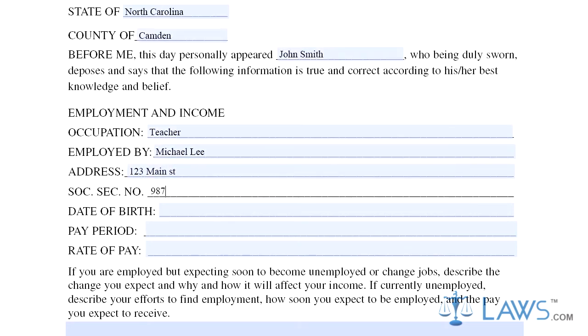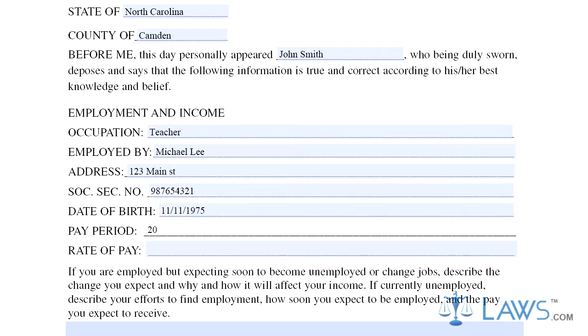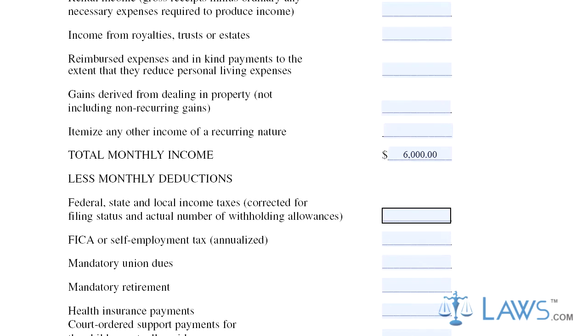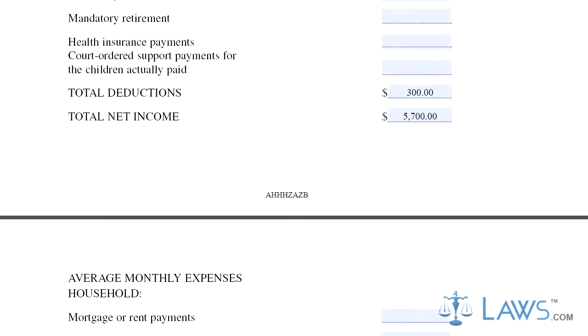Step 3: On the second page, total all other sources of income. Next, total all deductions withheld from your wages. Subtract your deductions from your income to figure out your total net income.